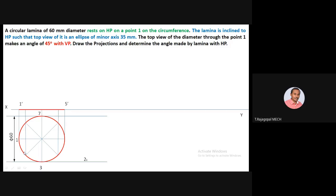Points one through five will be visible; hidden points are six, seven, and eight. Extend the projectors — the inclination is not given and must be identified. The top view minor axis is 35mm. After extending projectors from three and seven, mark 35mm as the minor axis. Extend projectors from one and five; the minor axis is 35mm and the major axis is 60mm. Join points three and seven. With that knowledge, complete one-one and five-one.